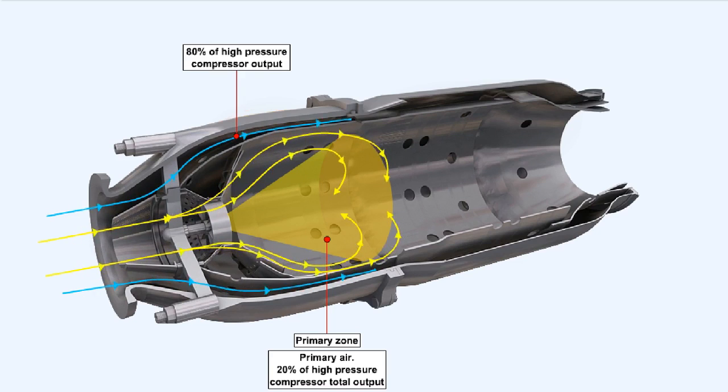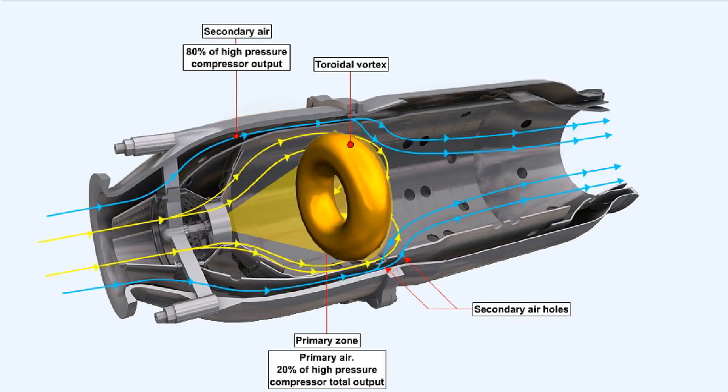The remaining 80% of the output of the high pressure compressor, air which has not been directed through the snout, goes into the space between the flame tube and the air casing. Some of this remaining air, approximately another 20% of the output of the high pressure compressor, is allowed into the flame tube through secondary air holes.